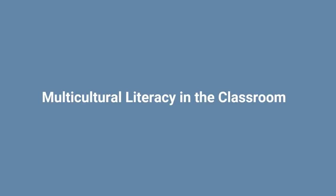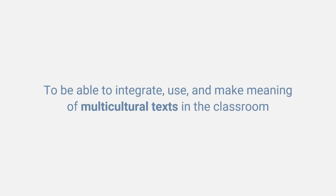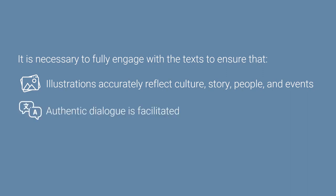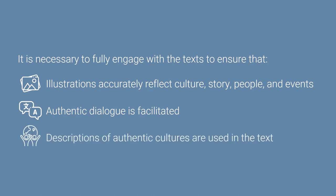How can multicultural literacy be used in the classroom? A good starting point is to be able to integrate, use, and make meaning of multicultural texts in the classroom. This means fully engaging with the texts to ensure that: 1. Illustrations accurately reflect culture, story, people, and events. 2. Authentic dialogue is facilitated. 3. Descriptions of authentic cultures are used in the text.